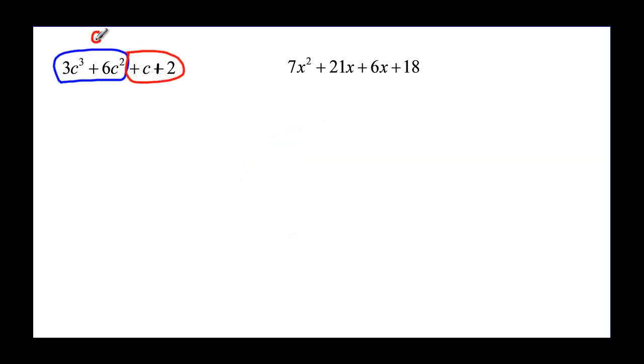We're trying to find the greatest common factor of each one. For the first two terms, they have a 3 in common, and the smallest exponent would be 2, so 3c² is the common factor.